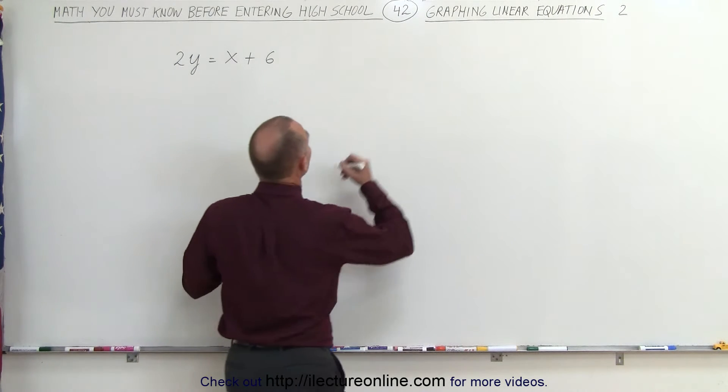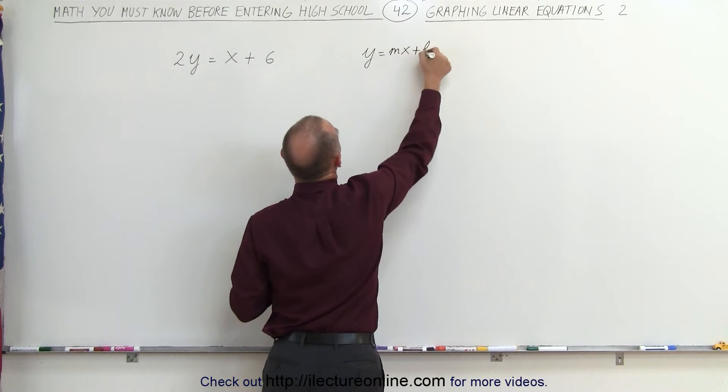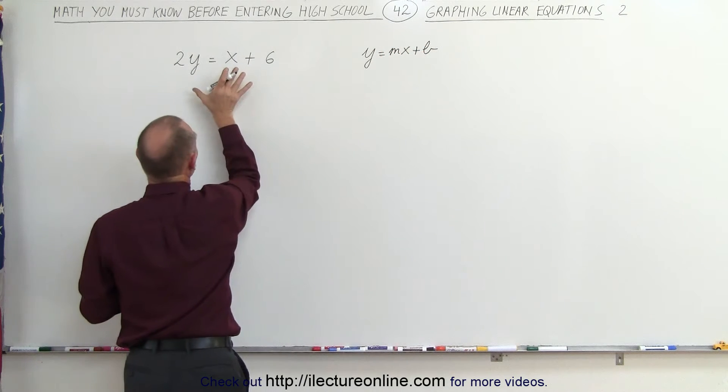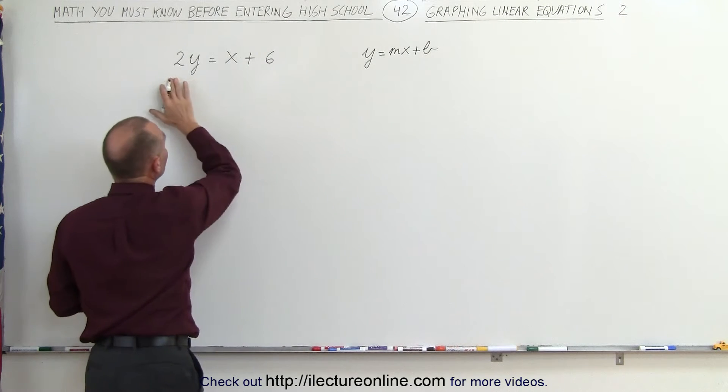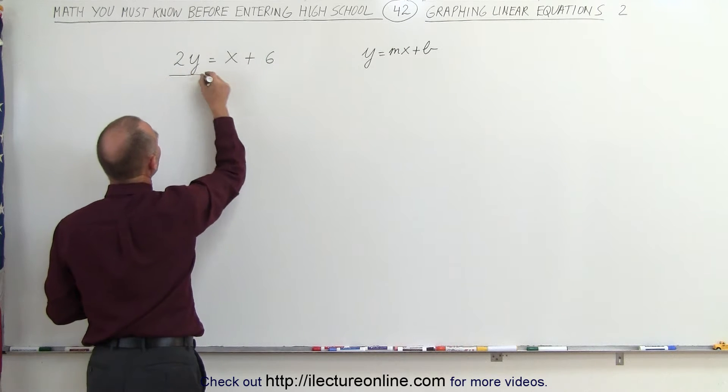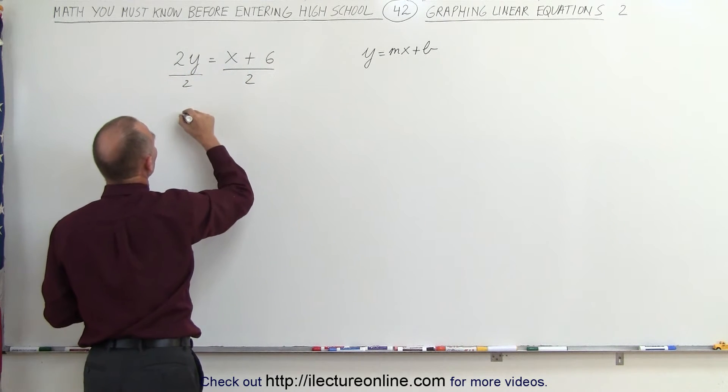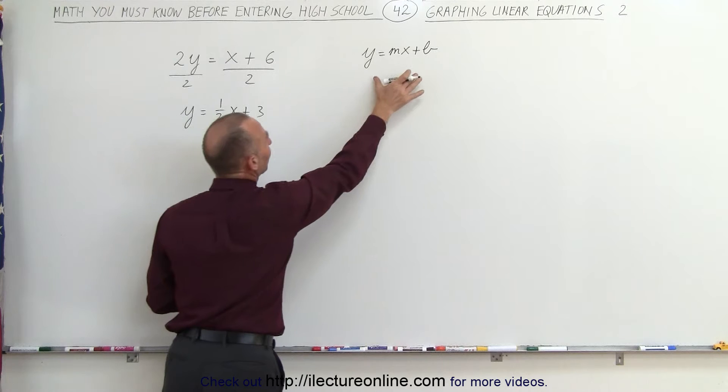What we're going to do here is use the general form y equals mx plus b. That means we have to take the equation and make it look like this. We divide both sides of the equation by 2. We divide the left side by 2, the right side by 2, and this gives us y equals 1/2x plus 3, which is exactly what we have over here.